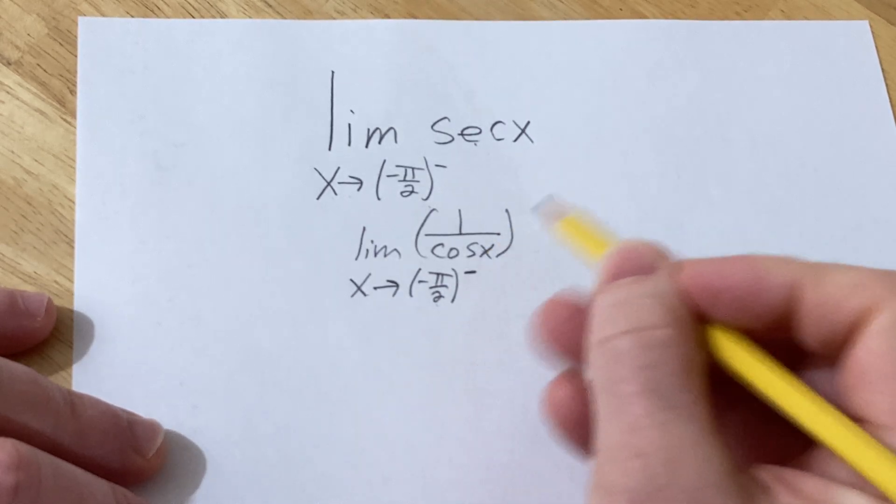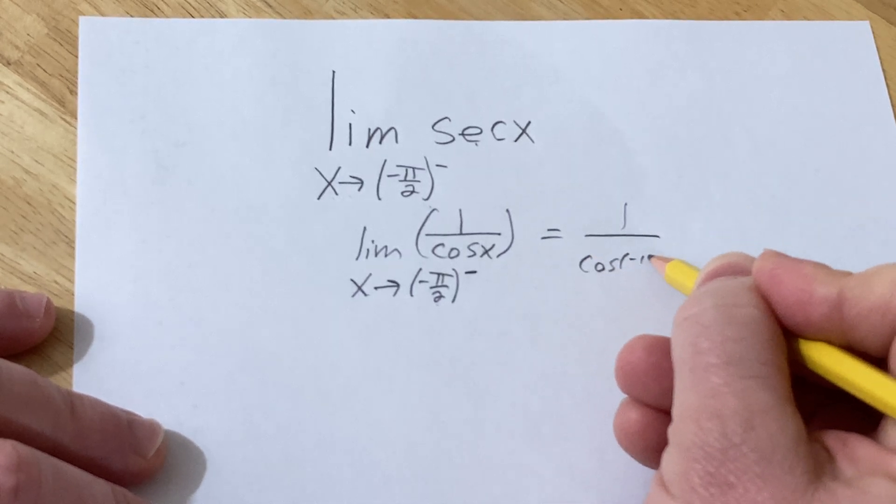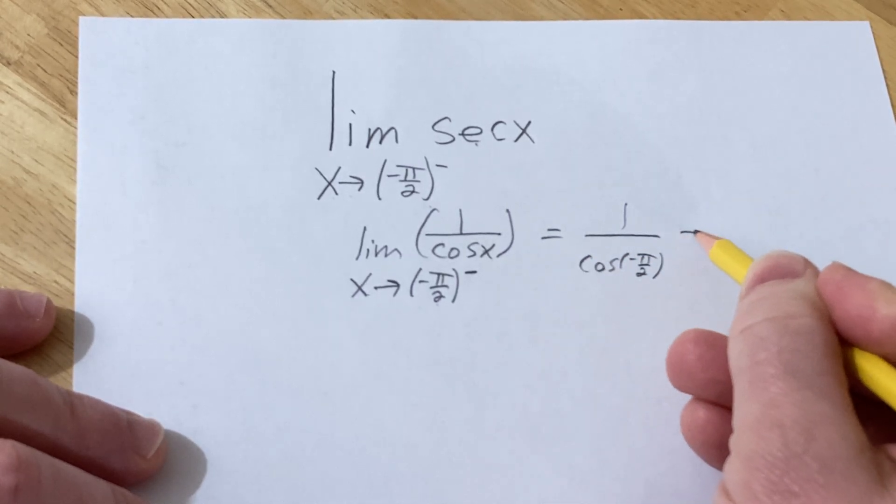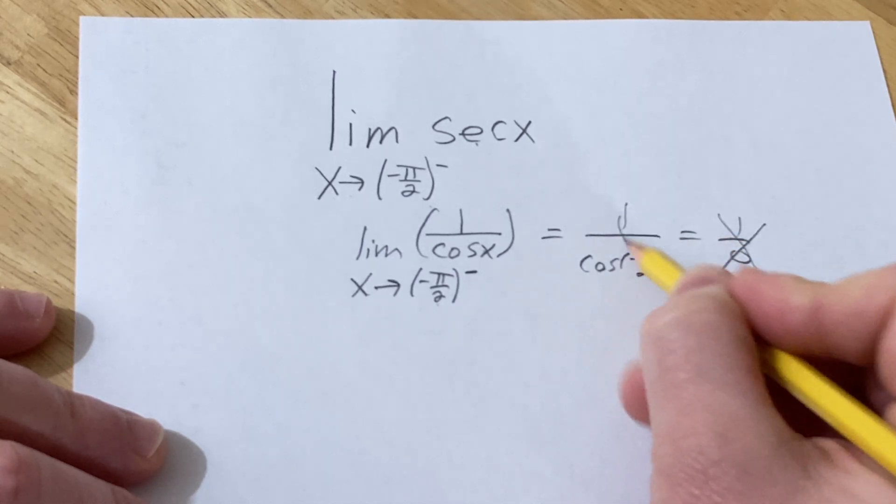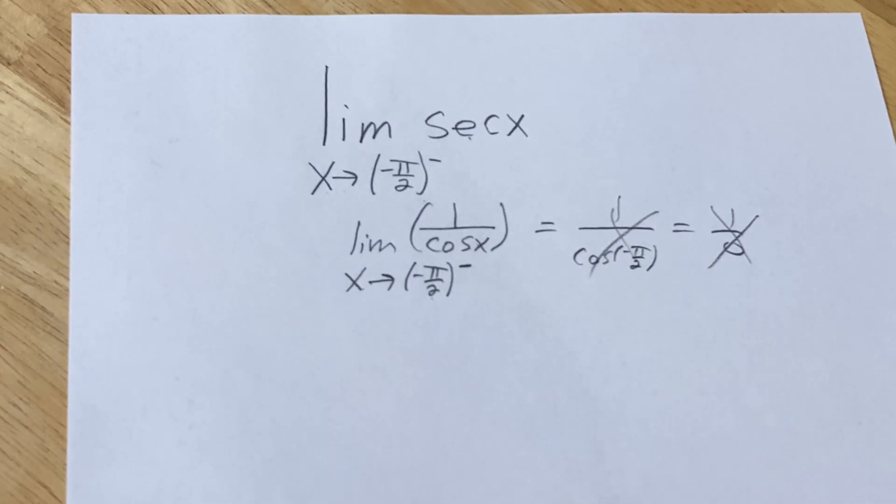If you plug in negative pi over 2, you get 1 over cosine of negative pi over 2, which is 1 over 0. So this limit is not going to exist, and we have to write the correct answer now.